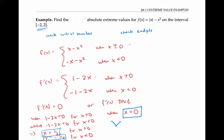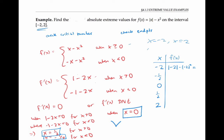So I have critical numbers x equals negative one half, zero, and one half, and endpoints x equals negative two and x equals two. Making a table: f of negative two equals the absolute value of negative two minus four, which is negative two; f of negative one half equals one half minus one fourth, which is one fourth; f of zero equals zero; f of one half equals one fourth; and f of two equals negative two.